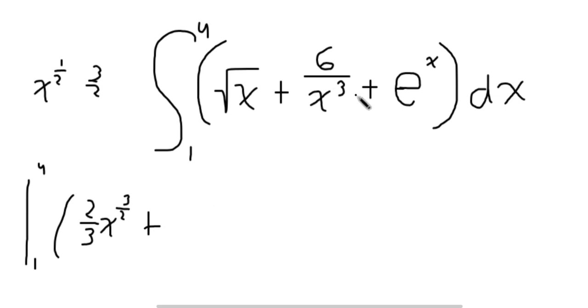Next term, we have 6 over x cubed. This is a little tricky, but we can also write this as 6x to the negative 3. We're going to do the same thing. We're going to add 1 to the term, so you get negative 2. You're going to get x to the negative 2, then multiply by the reciprocal. The reciprocal of negative 2 is negative 1 half. So you're going to get negative 3, because negative 1 half times 6 is negative 3. You can also write this as negative 3x to the negative 2.